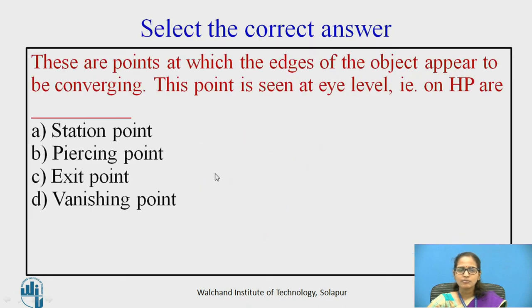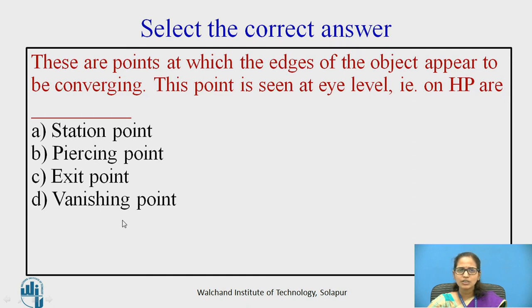These are the MCQs. These are the points at which the edges of the object appear to be converging, seen at the eye level on the horizontal plane. The options are: station point, piercing point, exit point, or vanishing point. The vanishing point is the correct answer.